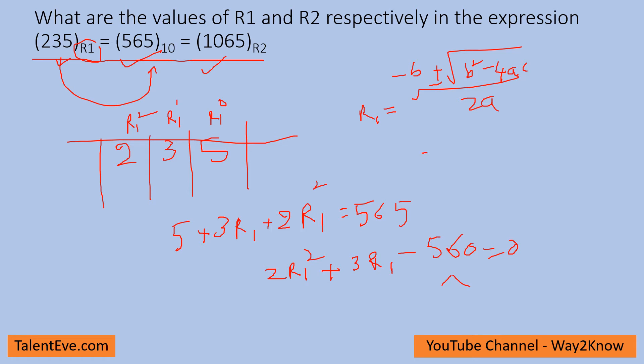The first coefficient is a, the second coefficient is b, and the constant is c. So minus b is nothing but minus 3 plus or minus root of b square, which is 9, minus 4 into a, which is 2, into c, which is 560, by 2a, which is 4.